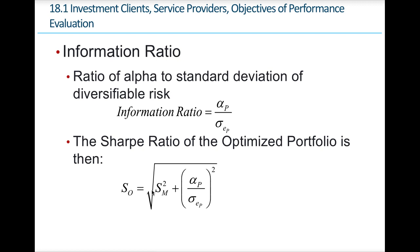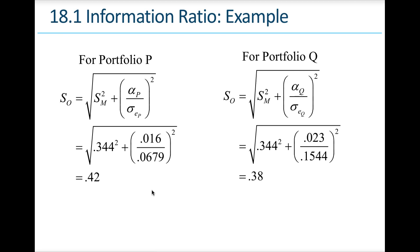Looking at example portfolios P and Q, we can input the numbers to see the output. We want to understand riskiness relative to diversification — the higher the multiple, the riskier the performance.